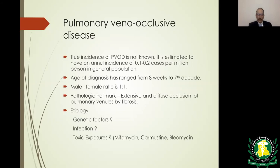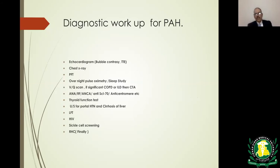Pulmonary venoocclusive disease is extremely rare with a prevalence of 0.1 to 0.2 cases per million per year. Age at diagnosis ranges from as young as 8 weeks to the seventh decade, and male-to-female ratio is approximately 1:1. The pathologic hallmark is extensive and diffuse occlusion of pulmonary veins by fibrosis. Etiology is unclear but may involve toxic exposure — for example, the speaker's own patient received mitomycin and later developed pulmonary venoocclusive disease-associated pulmonary hypertension.